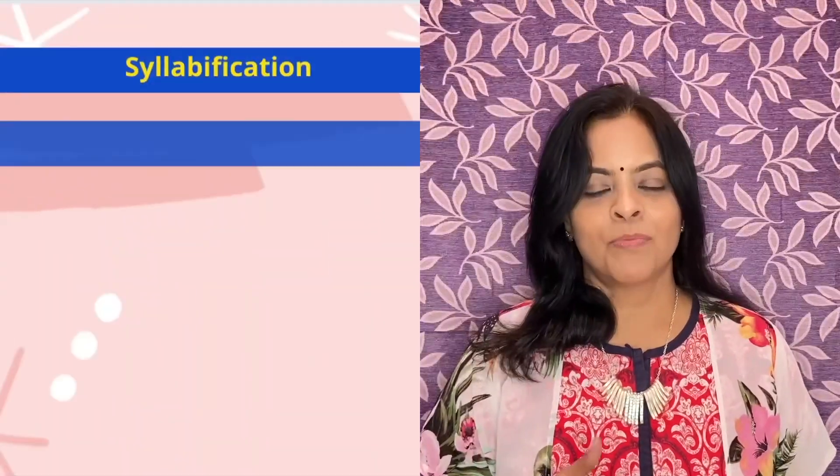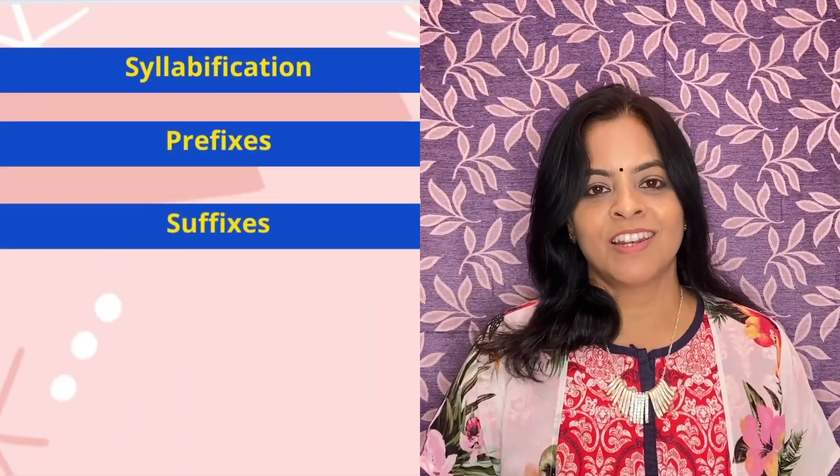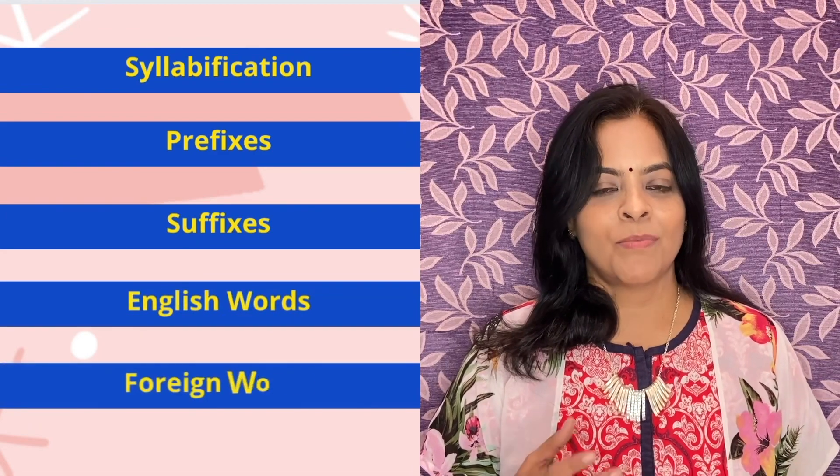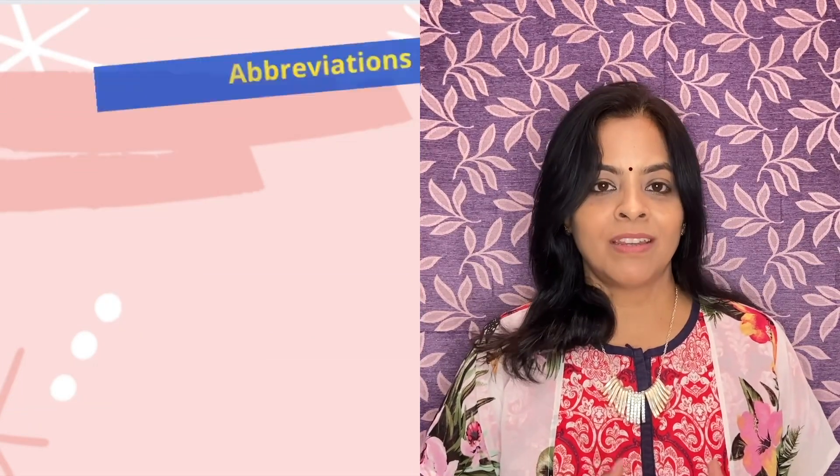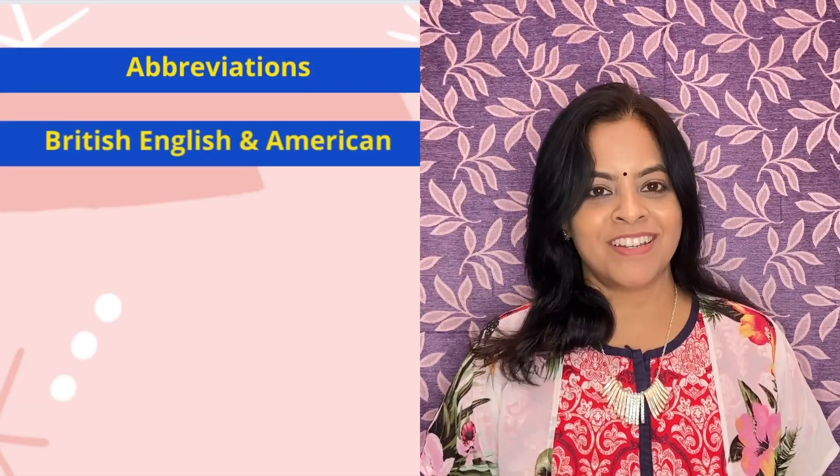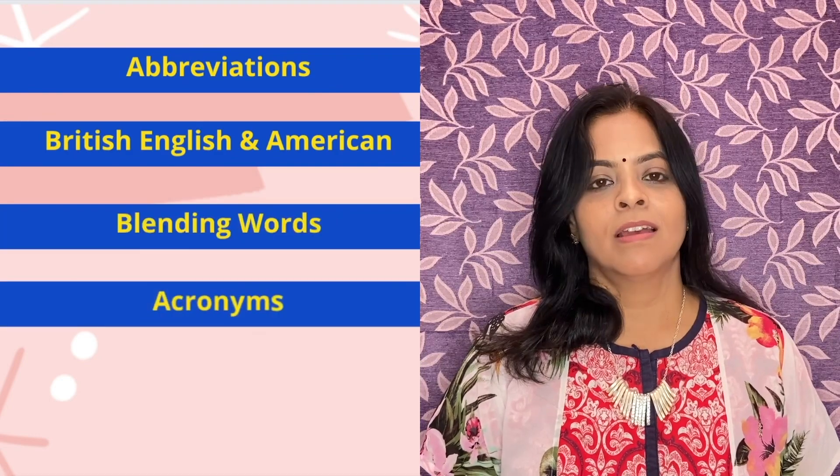In the first section — that is objectives — there are 20 marks. It will be like 80% vocabulary and 20% grammar. In the vocabulary section, the question types include: syllabification, prefix, suffix, English words into foreign words, abbreviations, American English, British English, blending words, and acronyms. This kind of vocabulary section checks your overall word knowledge.